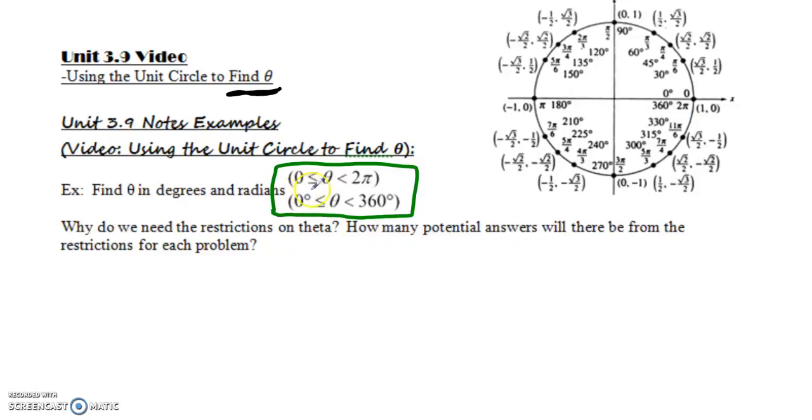And the reason why 0 is included and 2π or 360 is not, is if you think about if you start here and you go all the way around your circle, if you land here again at 2π, 0 and 2π are coterminal angles, so you would be saying the same angle twice. So we are only going to say one of the angles, and we just chose to pick 0 over 2π. So if you're dealing with anything on this line, you're going to pick 0 over 2π, or 0 over 360.